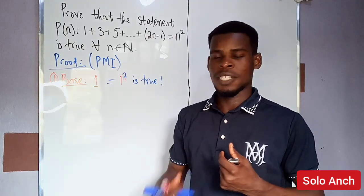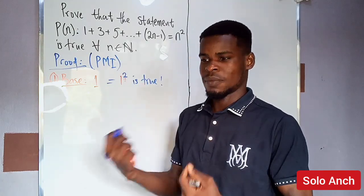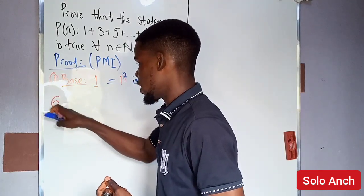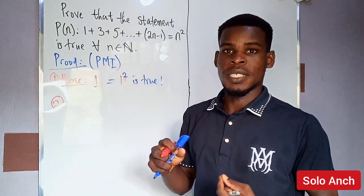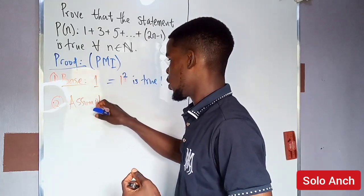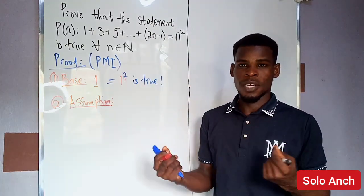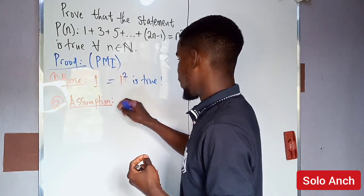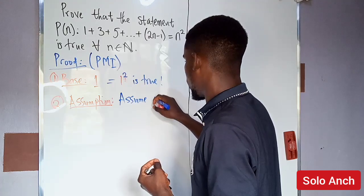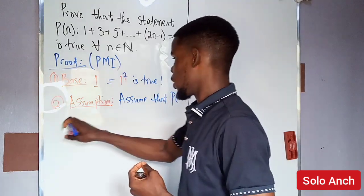We can't keep doing this for all natural numbers, so we bring in the induction hypothesis. The second step is the assumption step: we assume that the statement P(n) is true for some arbitrary natural number n equal to k.